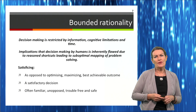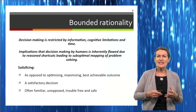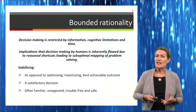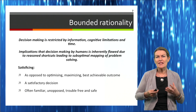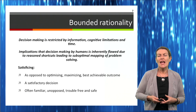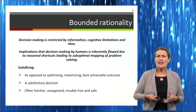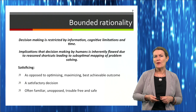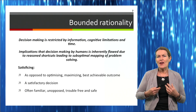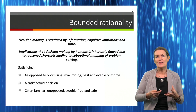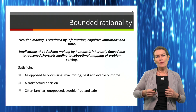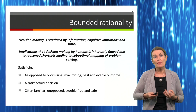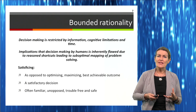Another theory linked to non-routine problems is bounded rationality, and this impacts how we look at a non-routine problem. It's about decision-making when restricted by the information, the cognitive limitations — our thoughts, how we understand it, our knowledge — and of course the time. The implication is that decision-making by humans is inherently flawed due to reasoning shortcuts leading to sub-optimal mapping of problem solving. It is our inherent nature to quite often go for a knee-jerk reaction and cut corners, not taking the time to tease a problem apart to look at more optimal situations — and this is called satisficing.